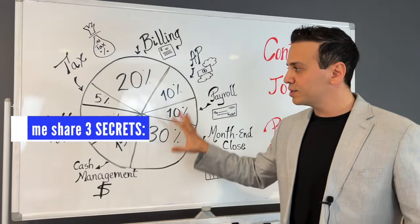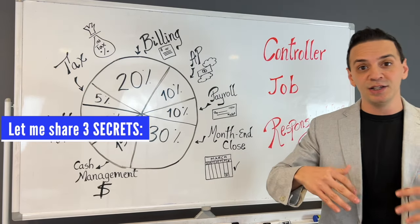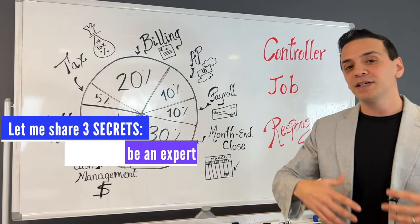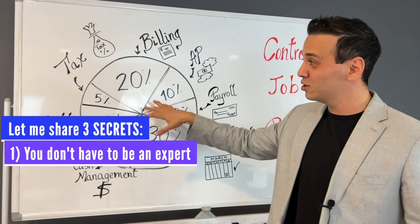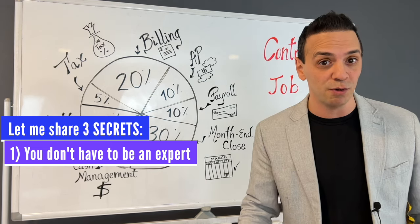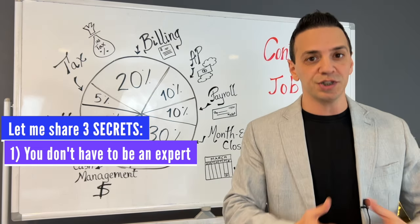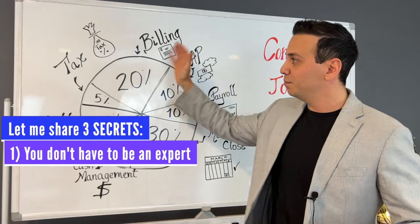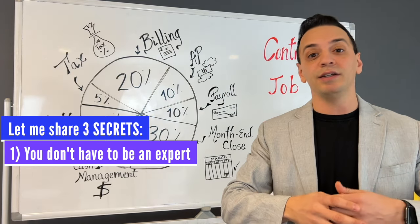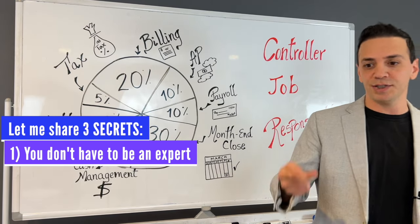Before we jump into these topics, I want to share three secrets so you can get a quick win out of this video. The first one is that you don't have to be an expert in these areas to become a financial controller. You just have to have enough exposure — meaning one to two years, three years in accounts payable, billing, or tax. You don't have to work decades in these areas to become a financial controller. That's secret number one.